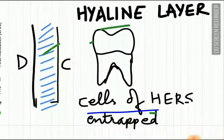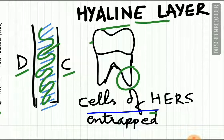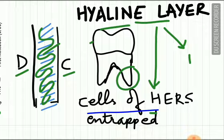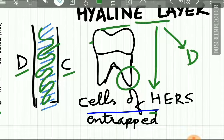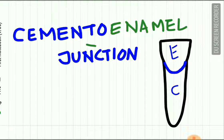In some cases between the cementum and dentine there is a structureless layer called the hyaline layer or intermediate cementum layer. It is mostly seen in the apical two-thirds of premolars and molars. It is believed this hyaline layer is formed due to Hertwig's epithelial cells entrapped in rapidly formed cementum and dentine, while others believe it is dentinal in origin. But the exact origin of the hyaline layer is unknown.